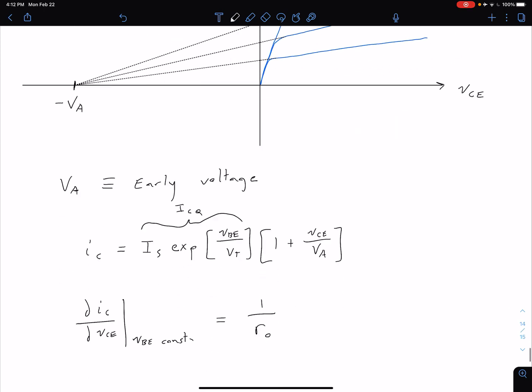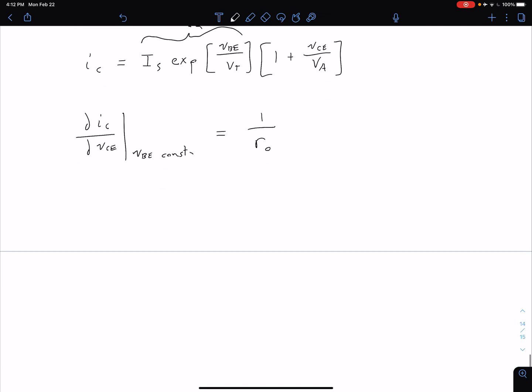So just from the slope definition here, combining those two equations what we get is that our R0 is equal to approximately our VA divided by our ICQ.